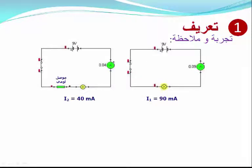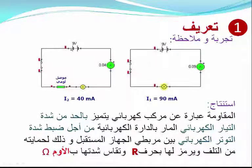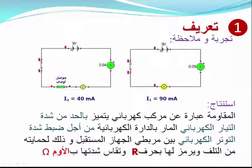ما السبب في انخفاض شدة التيار في الدارة الثانية؟ السبب هو أن الموصل المضاف يقاوم مرور التيار الكهربائي، أي أنه يعيق انتقاله بين طرفيه، مما أدى إلى انخفاض شدة التيار وخفوت إضاءة المصباح. هذه الظاهرة تُعرَّف بالمقاومة الكهربائية.